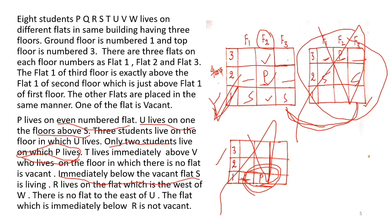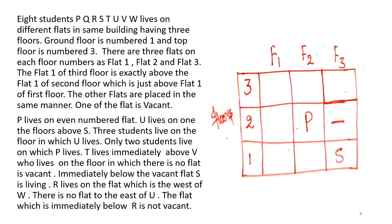So where can the vacant flat be placed — here or there? The vacant flat is placed at flat 3 of the second floor. S is placed immediately below the vacant flat. U is placed on the floor above S. The condition that there is no flat to the east of U confirms U's position at the eastern corner.